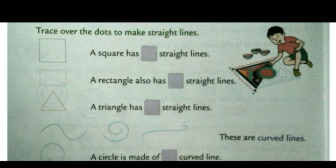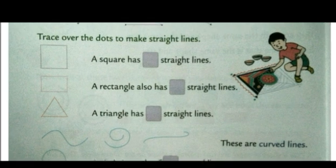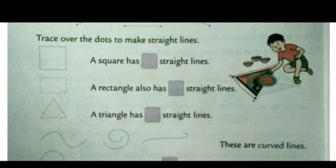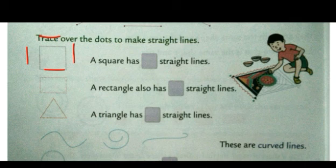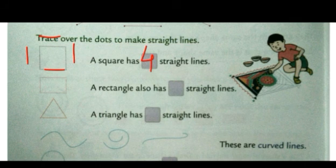A square has dash straight lines. How many straight lines are there in this square? One, two, three, four — four straight lines are there. So we will write here four.